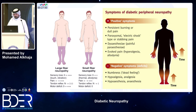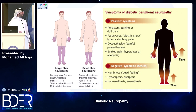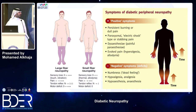In large fiber neuropathy, there can be normal or severe sensory loss, pain is severe, tendon reflexes can be absent, and motor deficit can range from zero to extreme. In small fiber neuropathy, sensory loss is minimal or absent, pain is severe, tendon reflexes are minimally reduced, and motor deficit is absent.